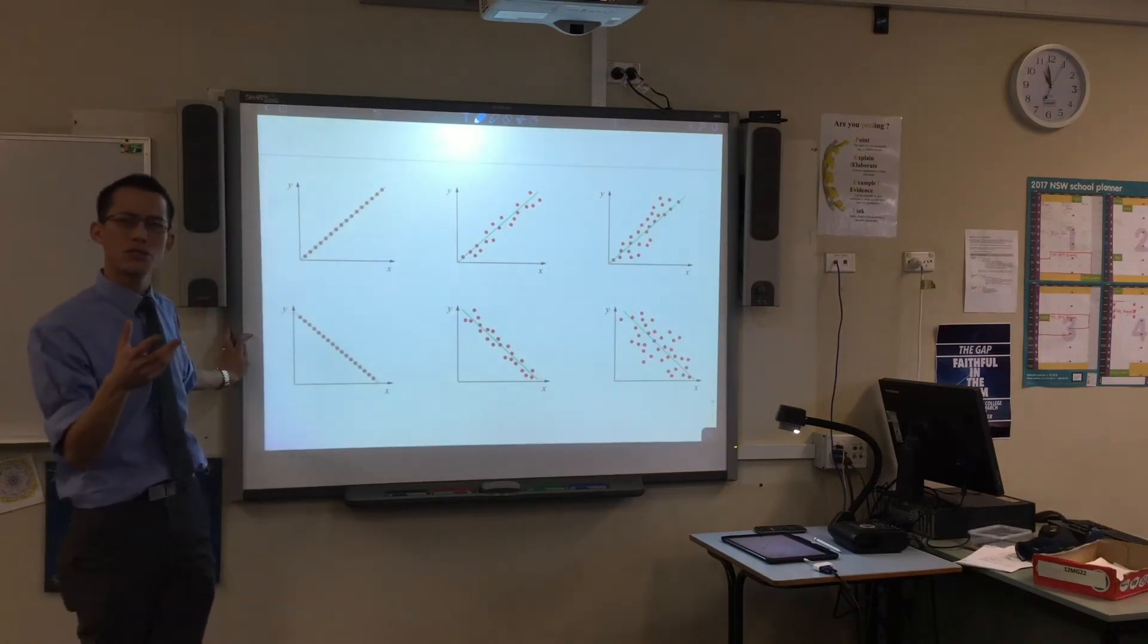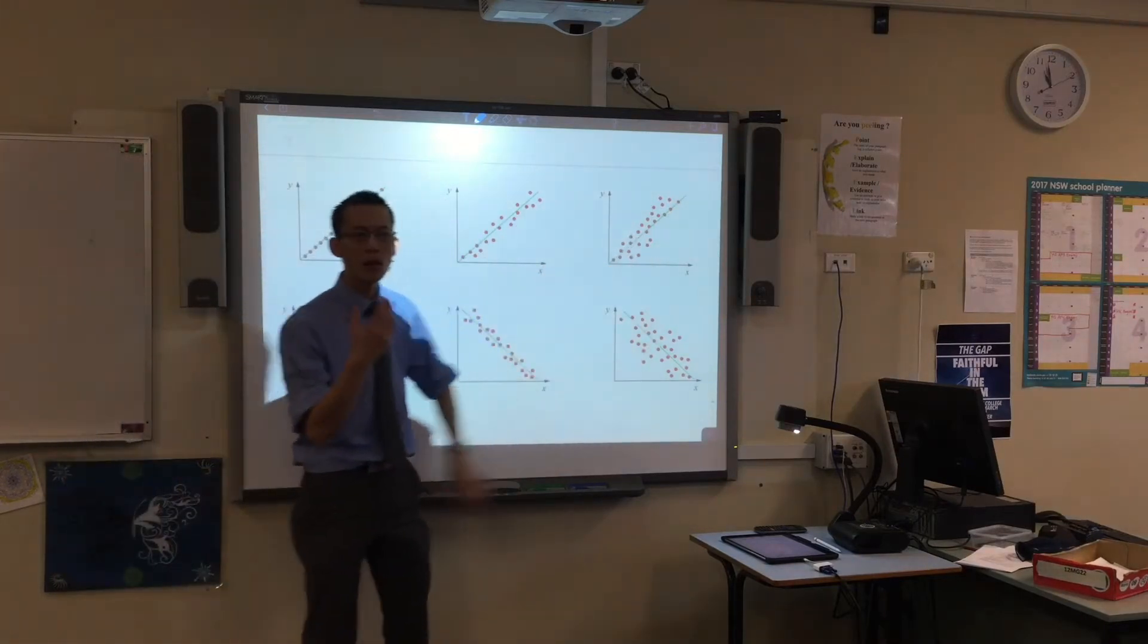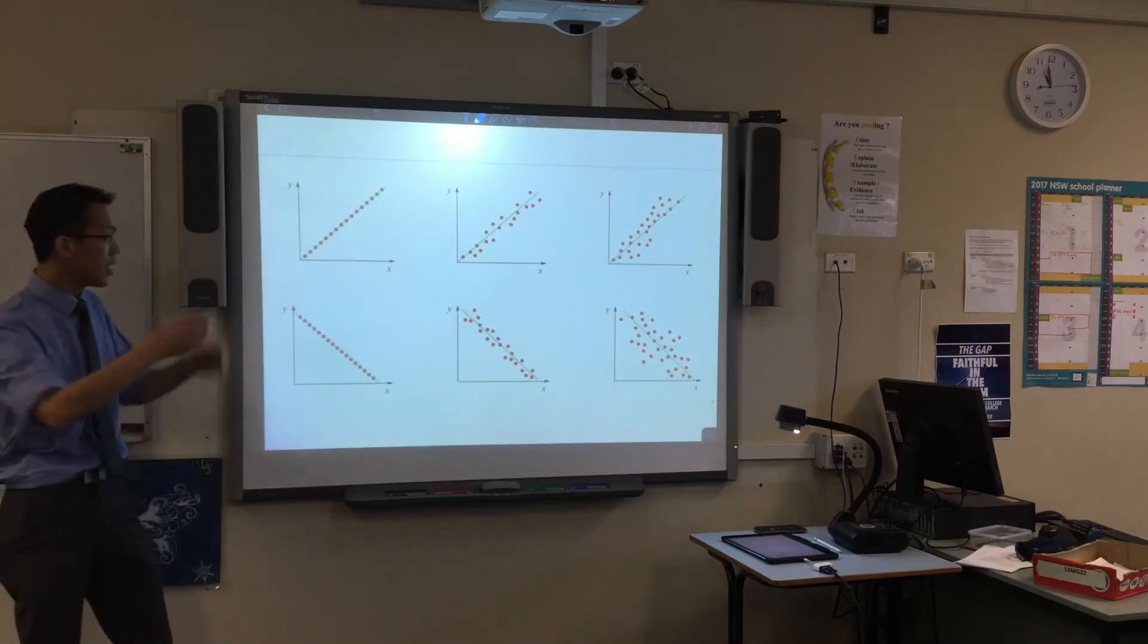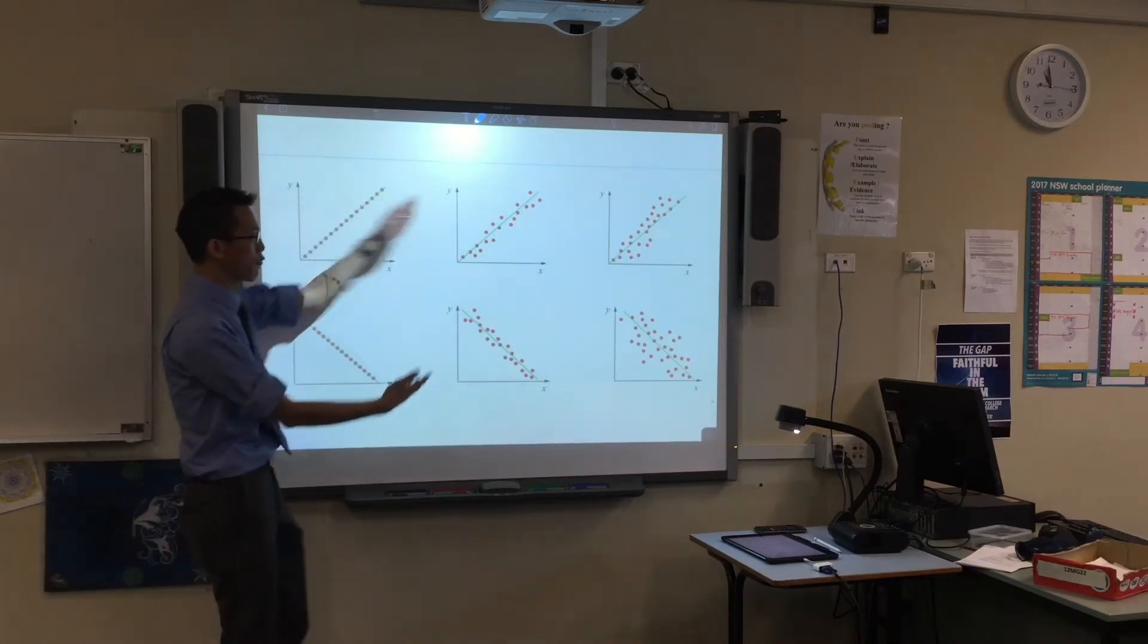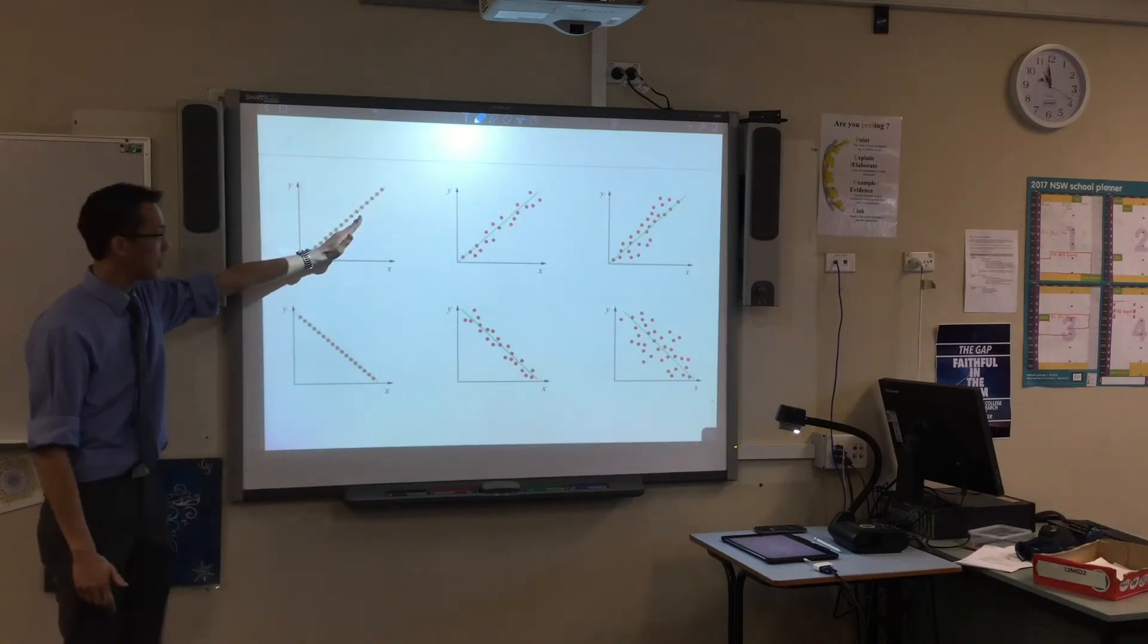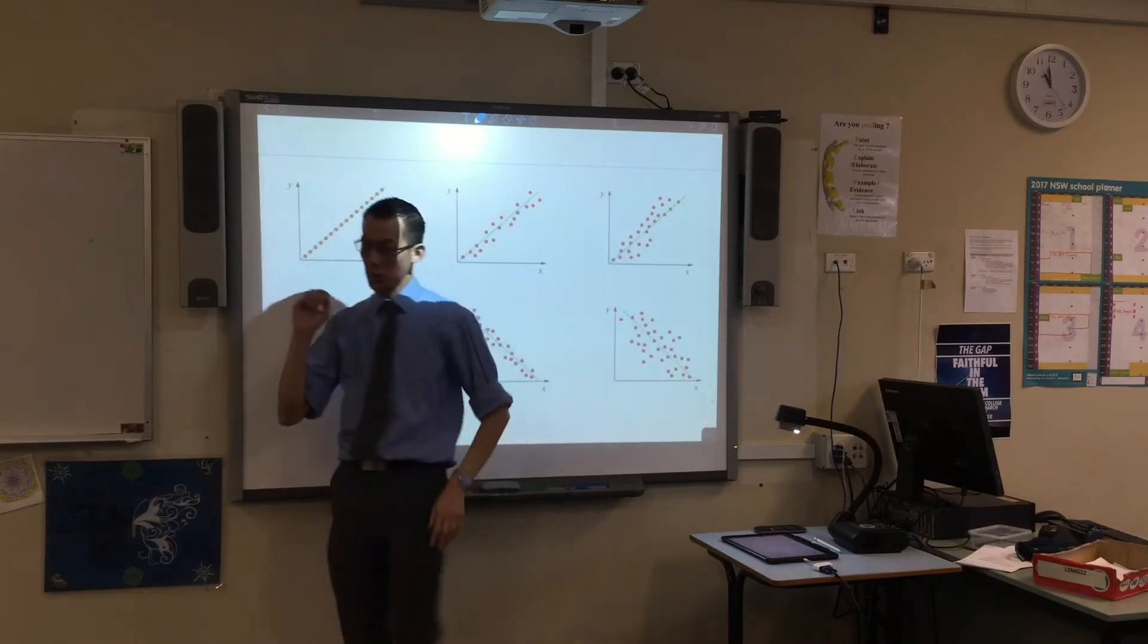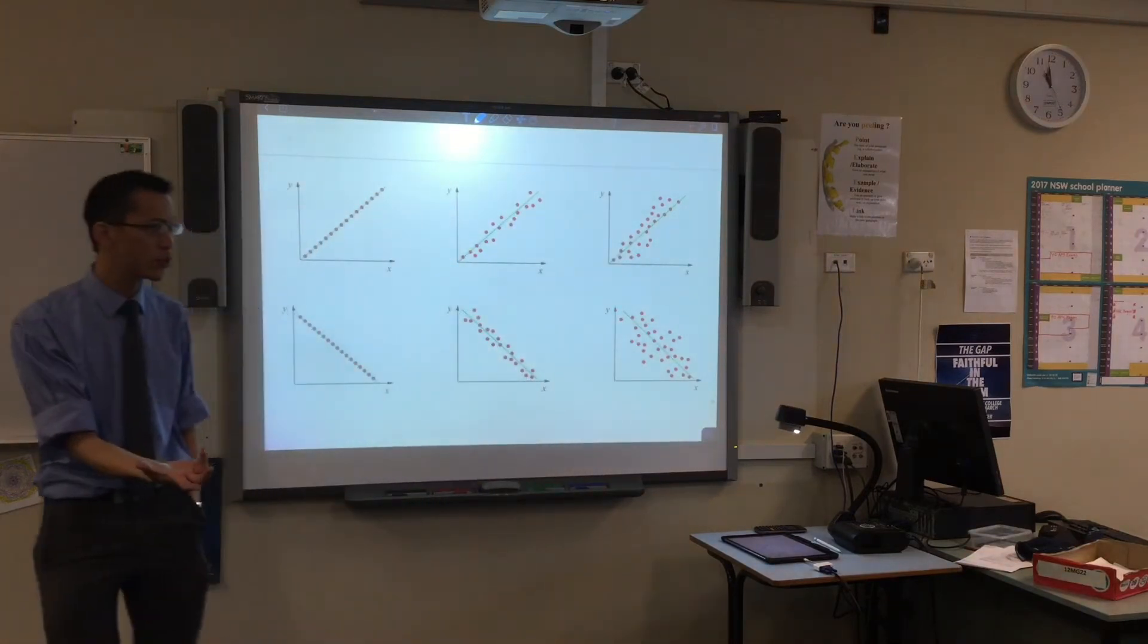All of these sets of data can have the same line of best fit. What words would you use to verbally describe how the data changes as we move from left to right? What words would you use? Spread. Okay, I could say the data gets spread out from the line of best fit. Everything used to be right, bang on over here but here it just kind of starts to diffuse outwards. So I could say spread.